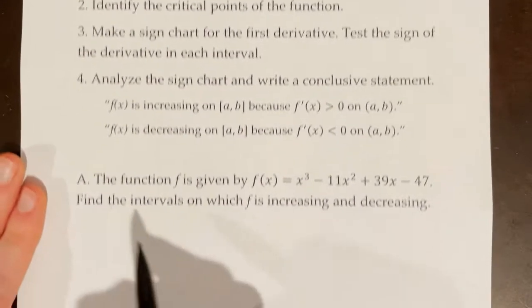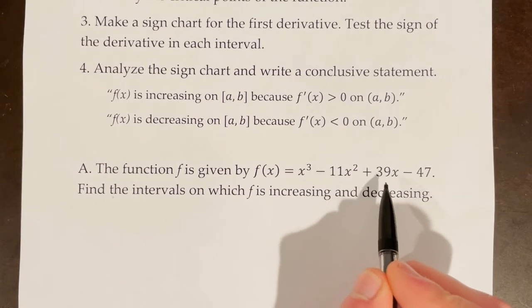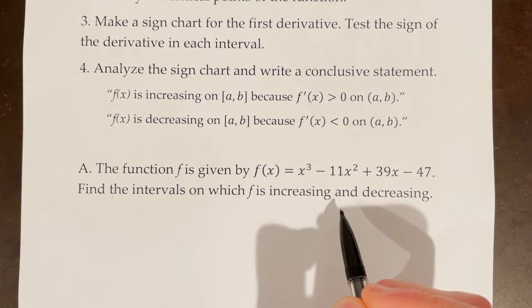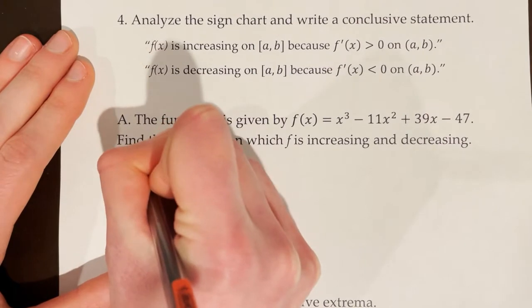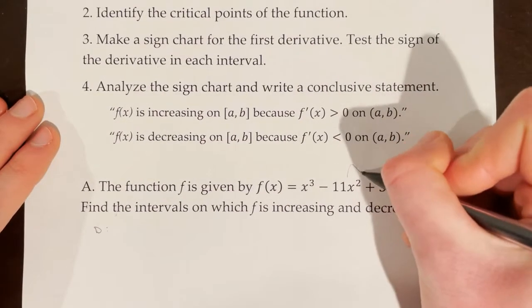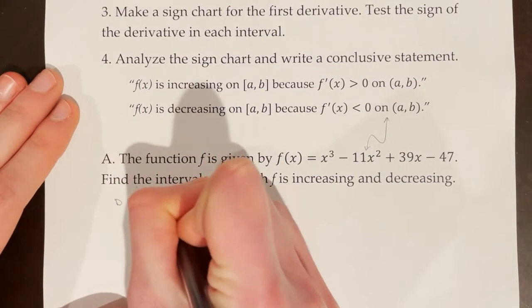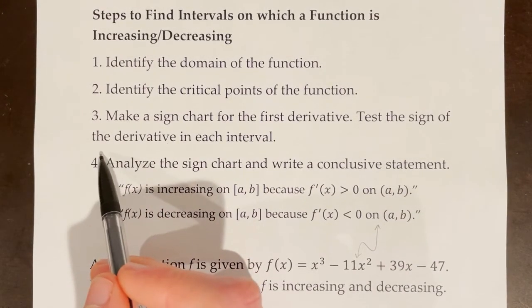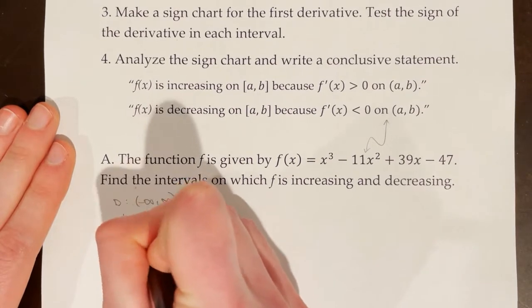Let's practice with example a. The function f is given by f of x equals x cubed minus 11x squared plus 39x minus 47. Find the intervals on which f is increasing and decreasing. The first step is to identify the domain. This is a smooth polynomial curve, so the domain is going to stretch from negative infinity to infinity. The second step is to identify the critical points. To do so, we first need to find f prime of x.